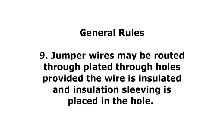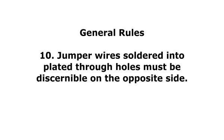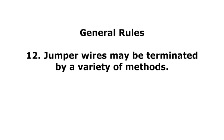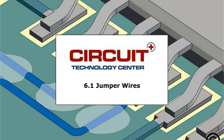9. Jumper wires may be routed through plated through holes, provided the wire is insulated and insulation sleeving is placed in the hole. 10. Jumper wires soldered into plated through holes must be discernible on the opposite side. 11. Jumper wires soldered to lifted or clipped component leads may require insulation to prevent shorting. 12. Jumper wires may be terminated by a variety of methods. See the webpage for more detailed instructions and illustrations covering a wide range of jumper wire applications.